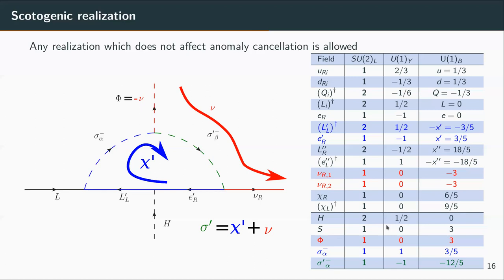These exotic fermions participate in the scotogenic generation of the effective Dirac neutrino masses. In blue we have the internal loop fermions, in red the right-handed neutrinos of the Dirac neutrino masses, in green one charged scalar, and in blue the other one that has the same charges as the exotic fermions. In addition we also include one singlet scalar associated with baryogenesis. This is our model — it is one baryon number model, and probably the simplest one in the literature until now.